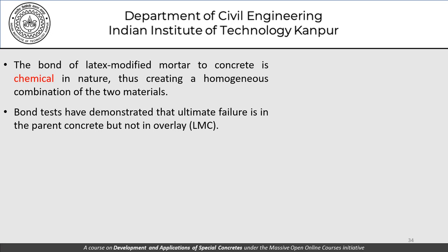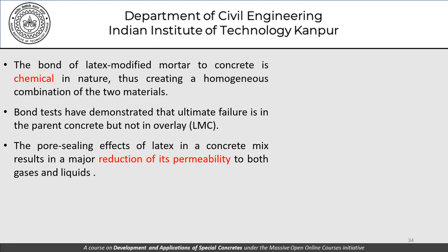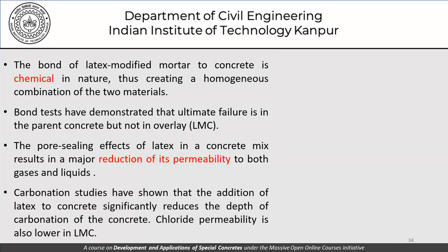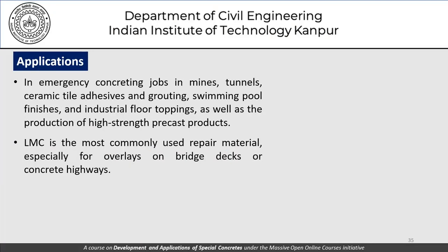In the hardened stage, latexes improve adhesion properties, tension and flexural properties, permeability, and chemical resistance of LMC mixes. The bond of latex modified mortar to concrete is chemical in nature, creating a homogeneous combination, and bond tests have demonstrated that ultimate failure occurs in the parent concrete rather than in the LMC overlay. The pore sealing effect of latex results in major reduction of permeability to both gases and liquids, and carbonation studies show significantly reduced depth of carbonation; chloride permeability is also lower. Applications include emergency concreting in mines and tunnels, ceramic tile adhesives, swimming pool finishes, industrial floor toppings, and most commonly as repair overlay on bridge decks and concrete highways.